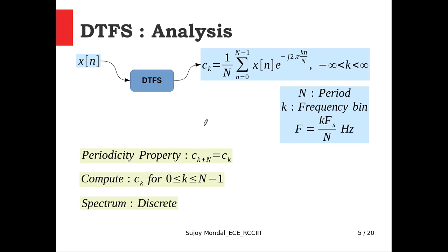Now we look at the analysis equation. The DTFS block can be solved through an analytical solution or through computer programming. The analysis equation is: c_k equals one over N, summation from n equals 0 to N minus 1 of x[n] multiplied by the kernel function — an exponential. Here, capital N is the period, small k is the frequency bin index, capital F is the frequency in Hertz, and this relation connects frequency bin index to frequency in Hertz.